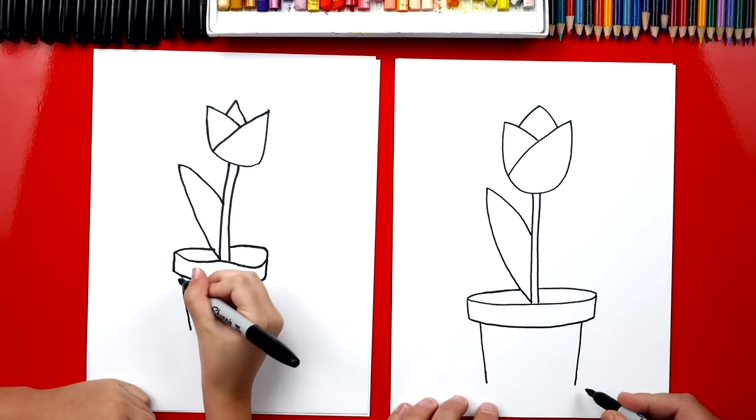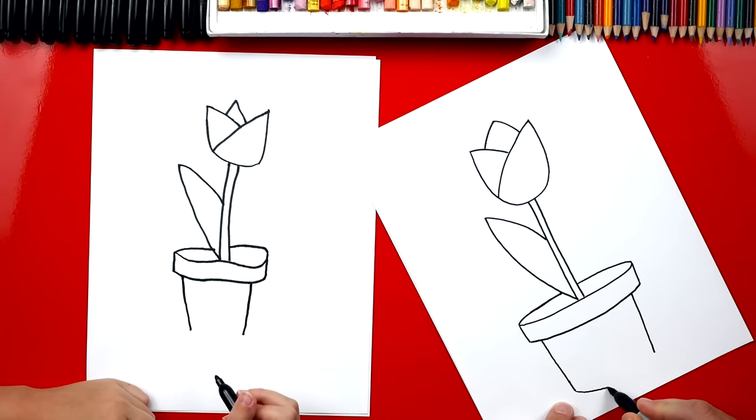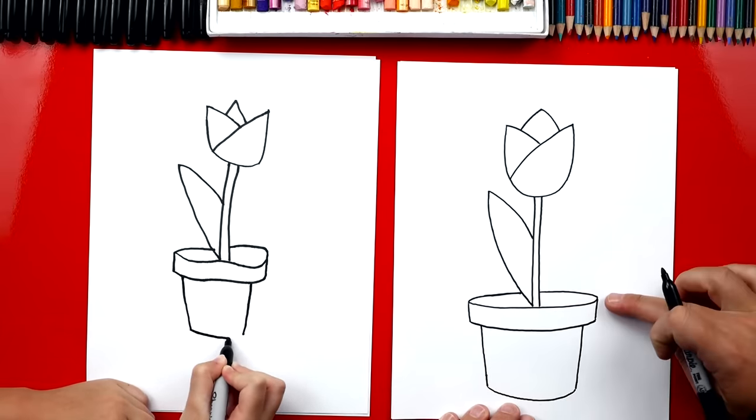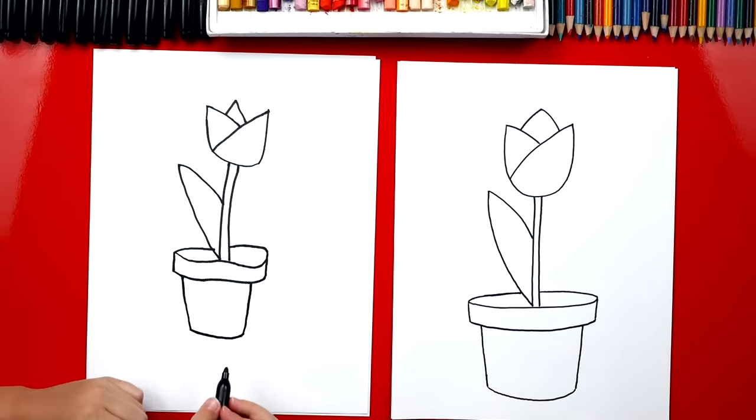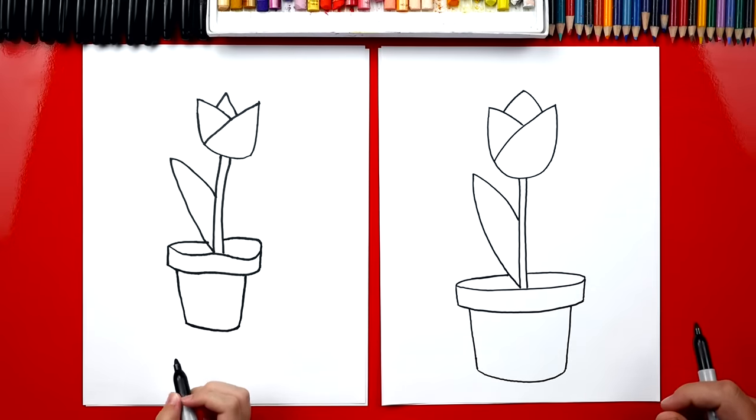Now we're gonna match this line with this line up here also. So we're gonna curve it. See how it's curved the same. Now, the reason why we drew these lines curved is so that our pot looks round or 3D. If we drew them straight, it would look flat. It looks like it's real. Yeah, it does. It looks very realistic.